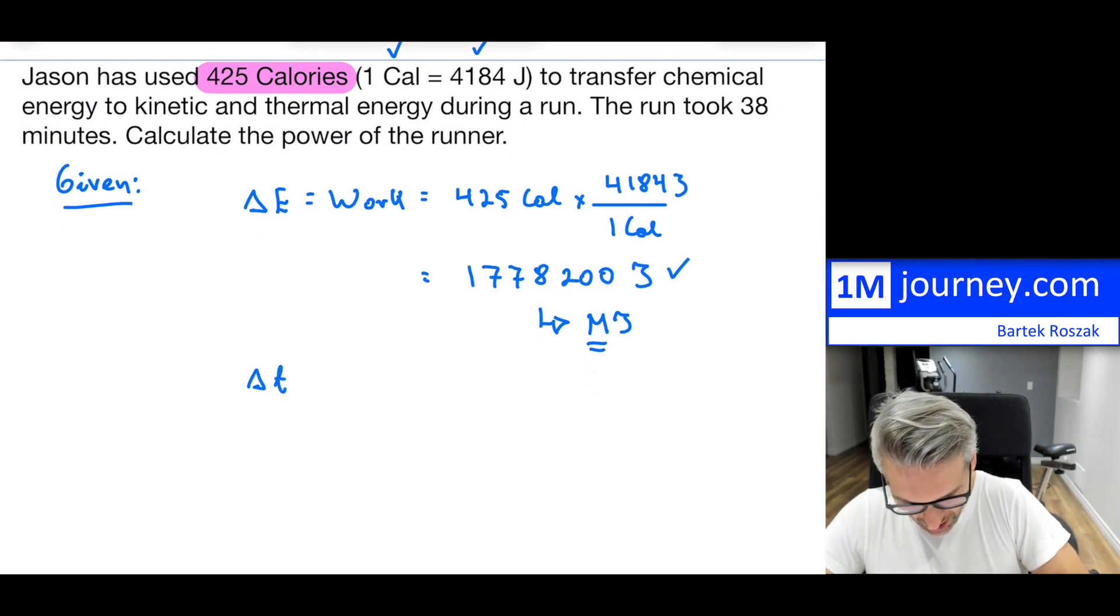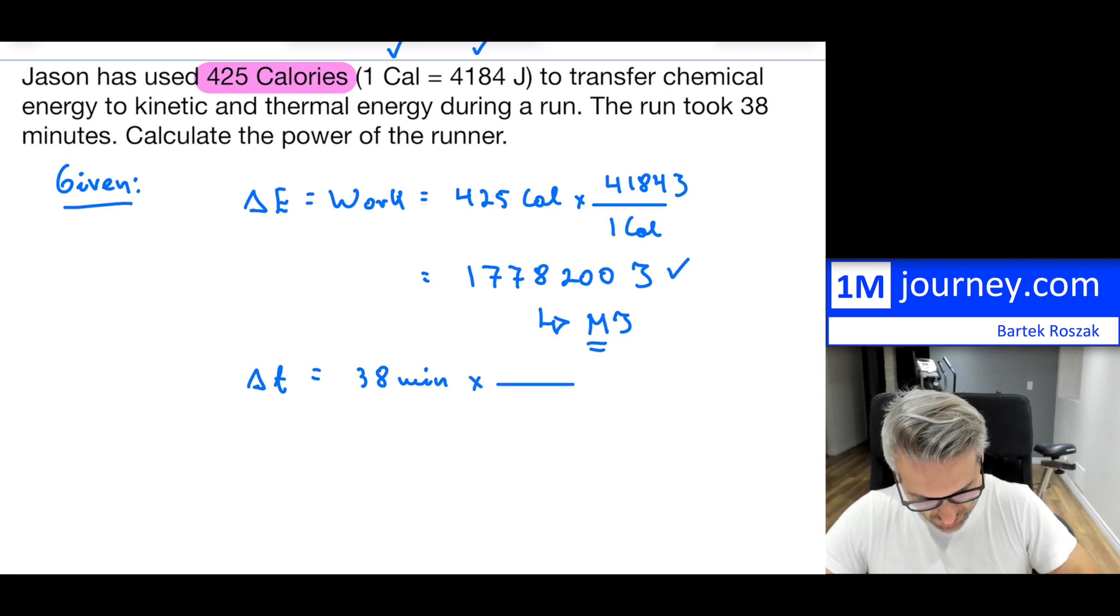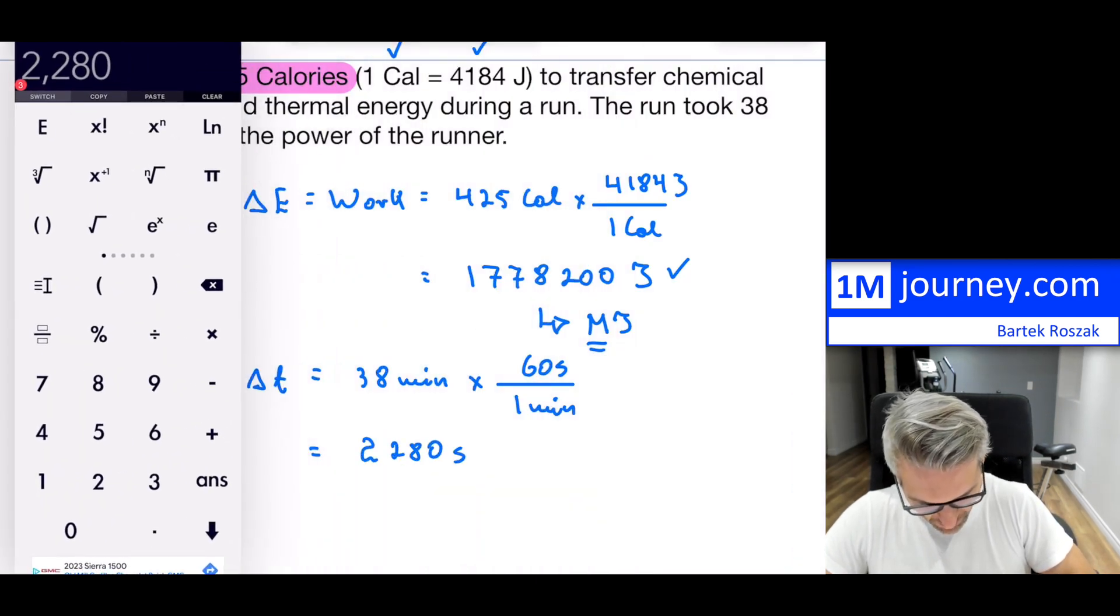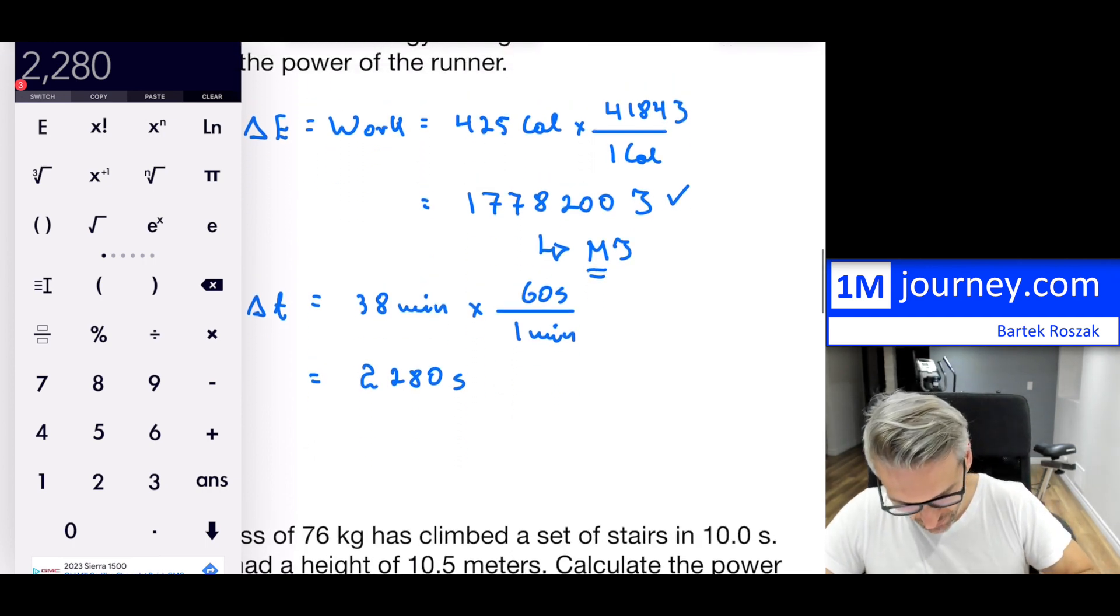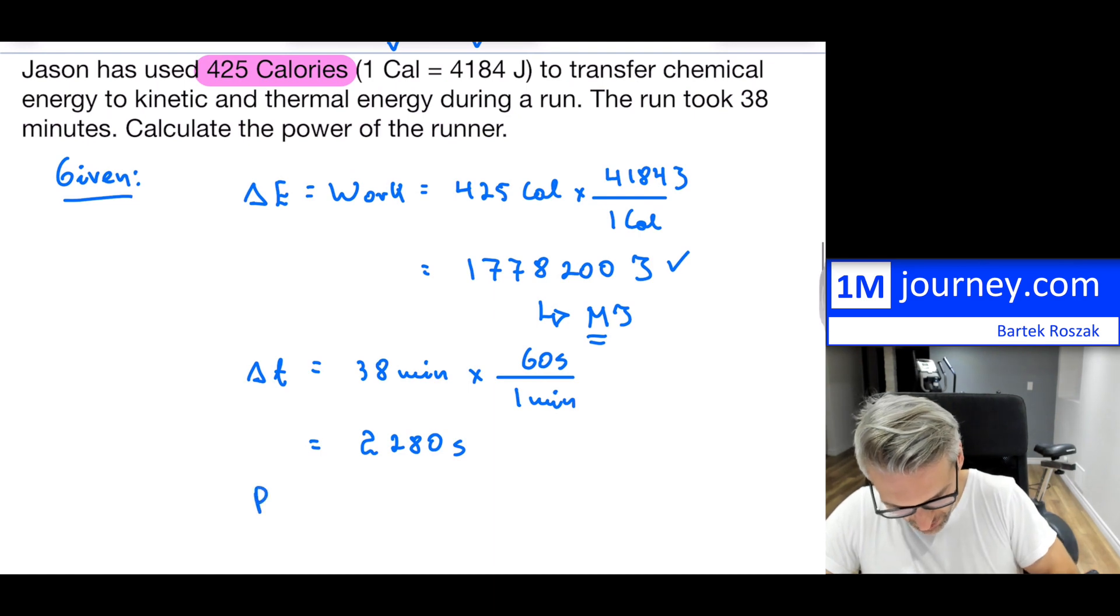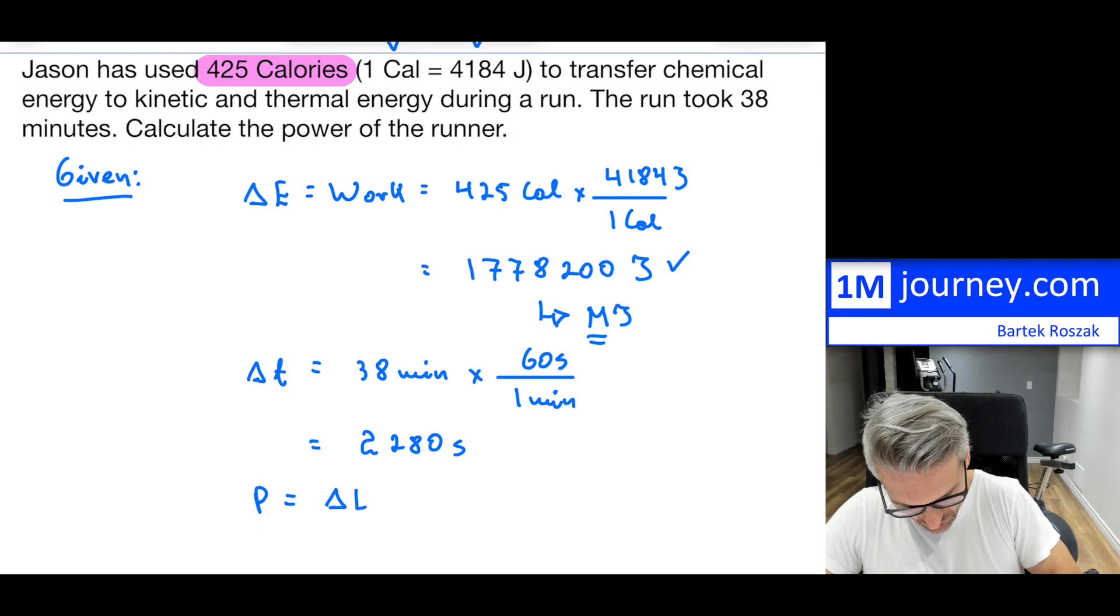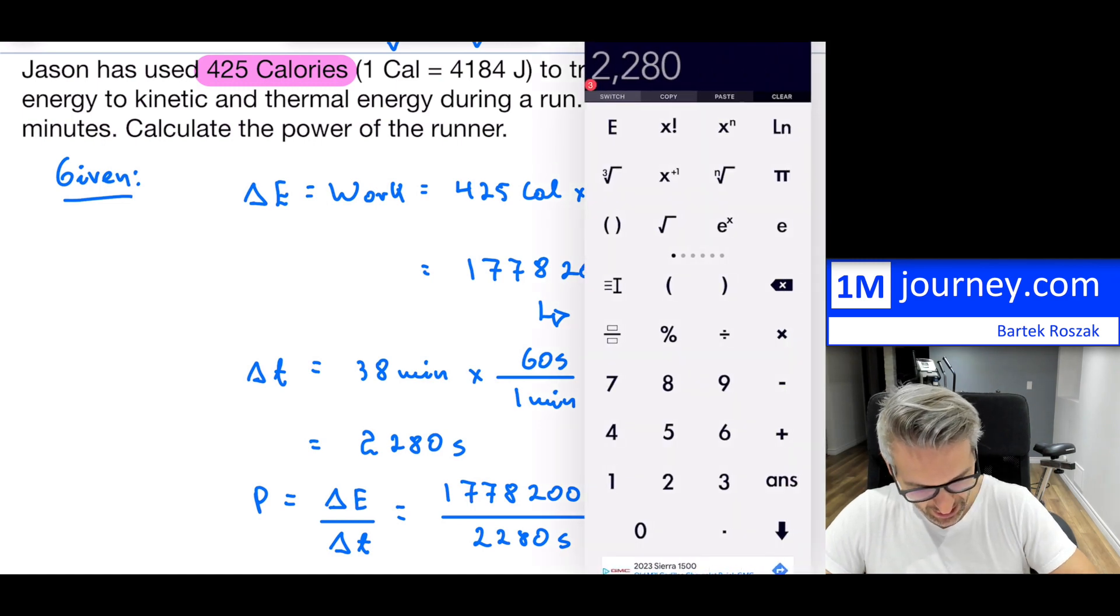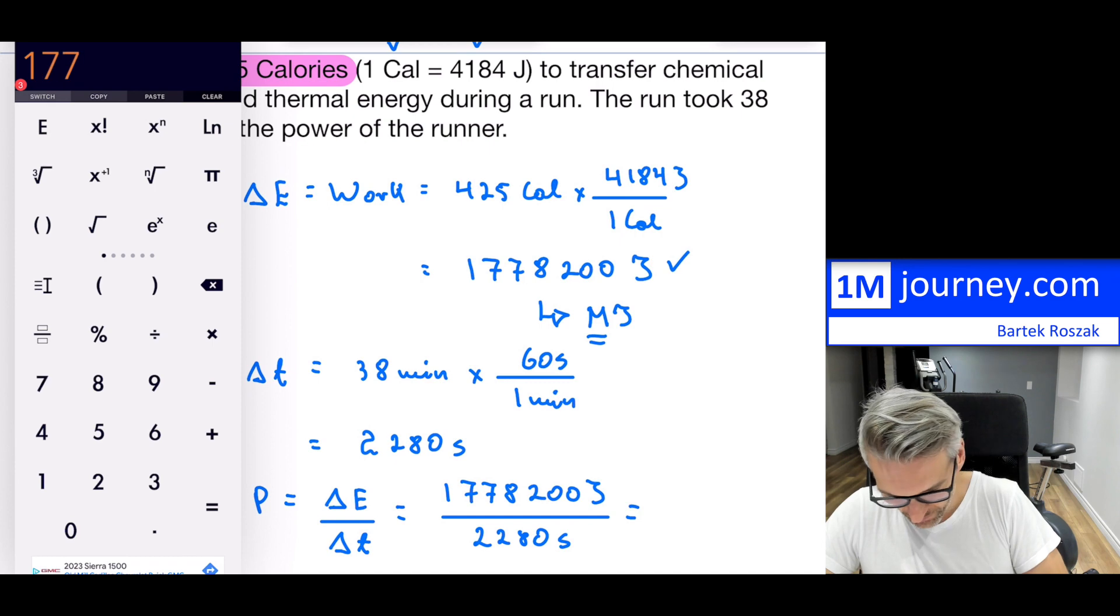The run itself, notice that the change in time was 38 minutes. This is in minutes, not standard. We need to convert this. One minute equals 60 seconds. I can do that calculation: 38 multiplied by 60. The minutes cancel, and this tells me how many seconds this particular run has taken. Now if you want to calculate the power, P = ΔE/Δt. I can substitute all of this in. That's my energy change. Here is my change in time.